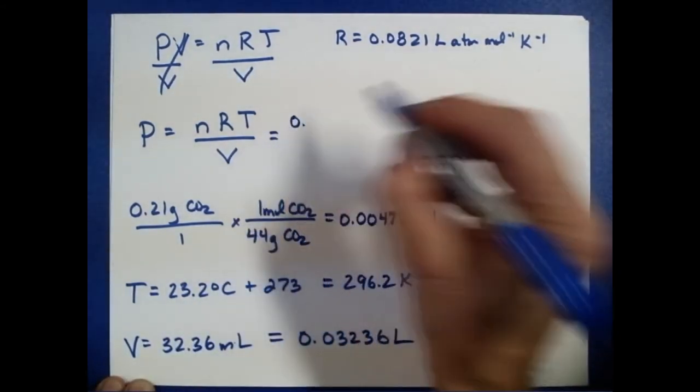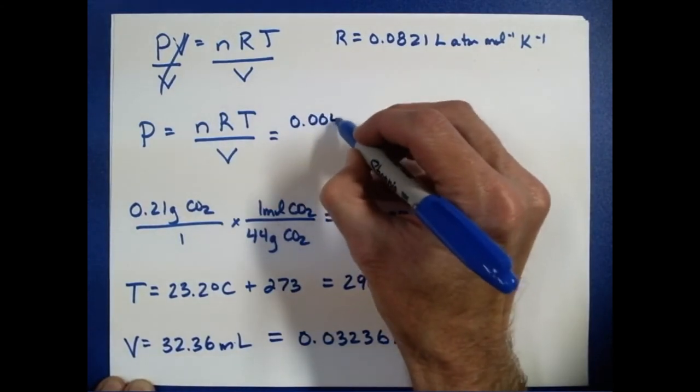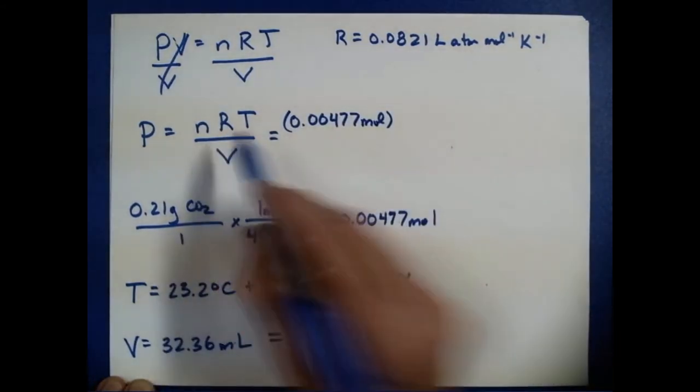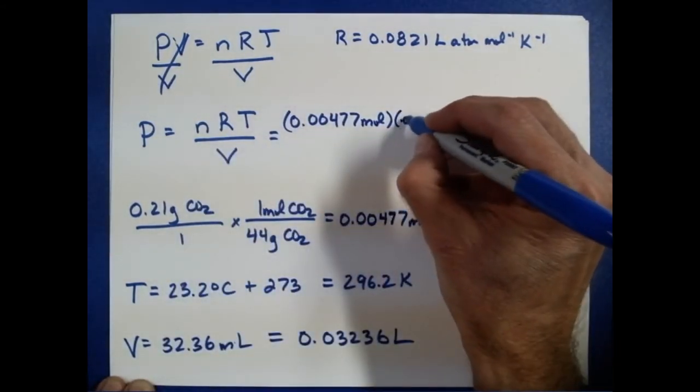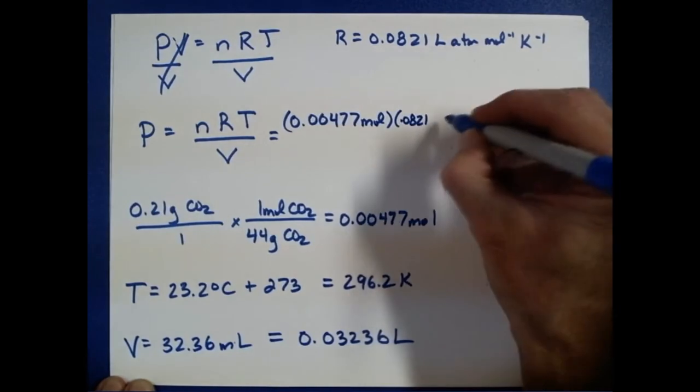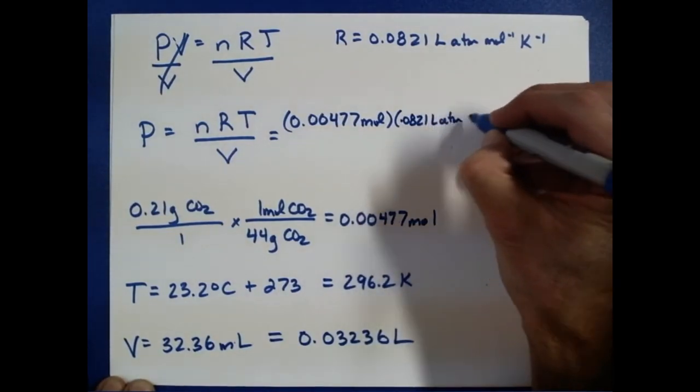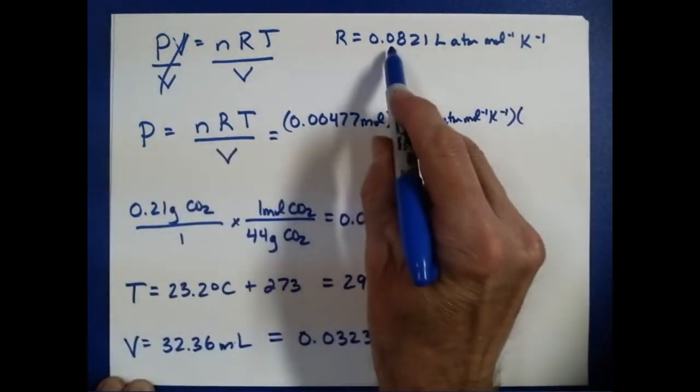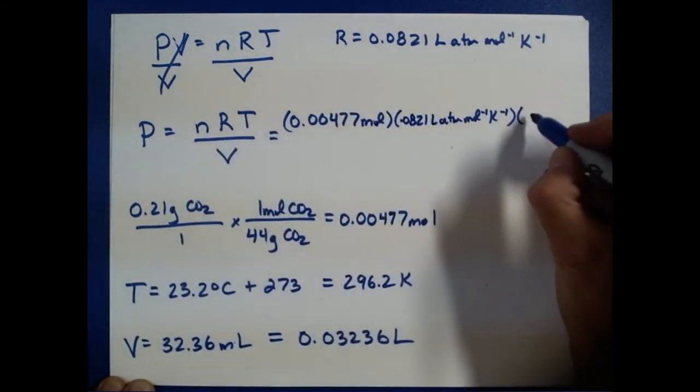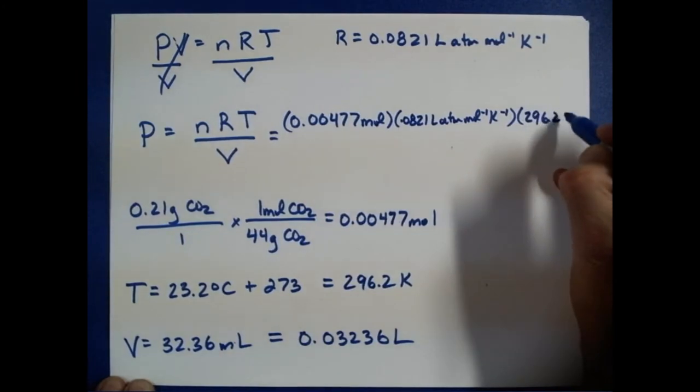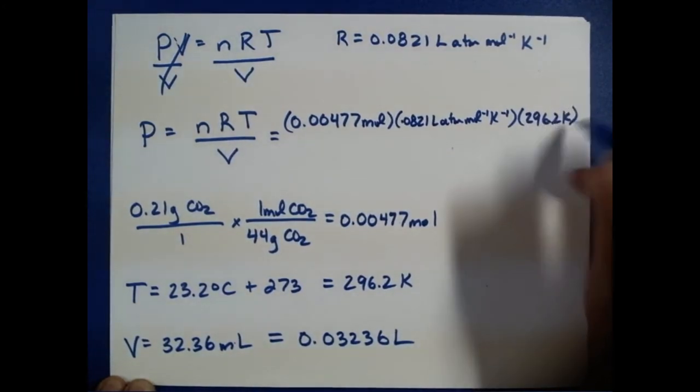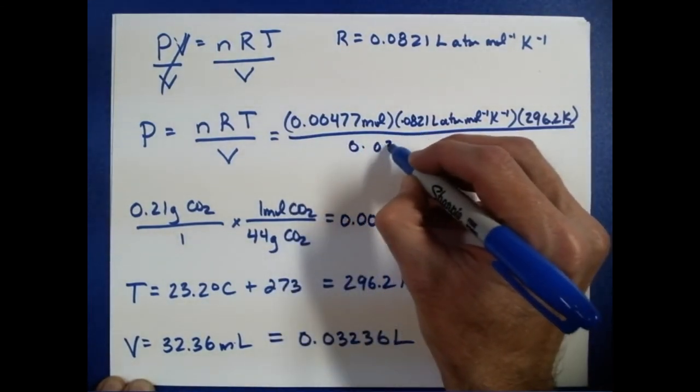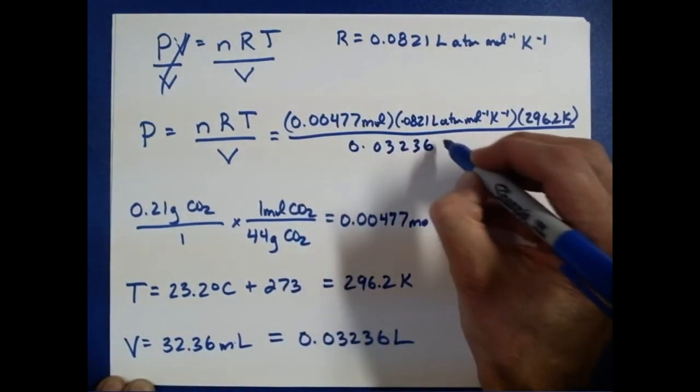N, that's going to be 0.00477 moles. Multiply that by the gas constant, 0.0821 liter atmosphere, inverse mole, inverse Kelvin. That's our R, our temperature, 296.2 Kelvin. And we're going to divide all that by the volume, which is 0.03236 liter.